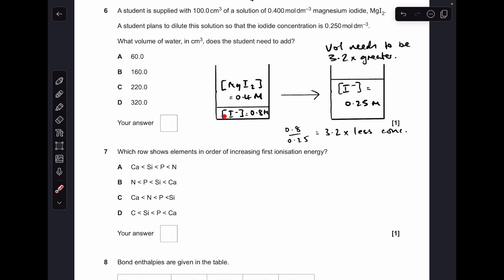So if we've got 100 cm cubed here, this volume needs to be 3.2 times that, so it needs to be 320. But we've got to be careful, we're not going to add 320 cm cubed because then the total volume would be 420. We need to add 220 and that will get us up to the 320. So it was option C.